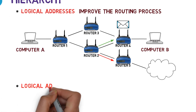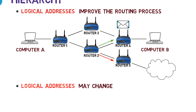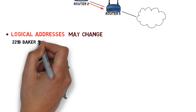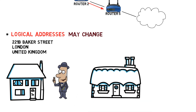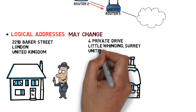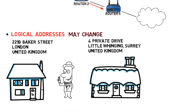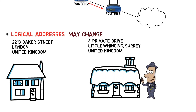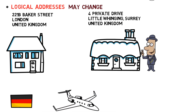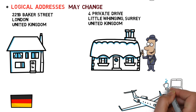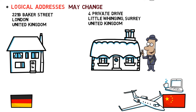Another important advantage of a logical address is that it may change. Consider again the case of mail addresses: Sherlock Holmes lives at 221B Baker Street, London. If he moves to 4 Privet Drive, Little Whinging, Surrey, it is still the same Sherlock Holmes, but you'd have to use the new address. The same applies to digital devices. If I'm using my laptop in Germany, my logical address is one that resides in Germany. If I get on a plane and go to China, I will get a different logical address. My laptop's network card will still have the same physical address — it's just the logical one that changes. This is just like Sherlock Holmes has the same ID number even though he changed his mail address.